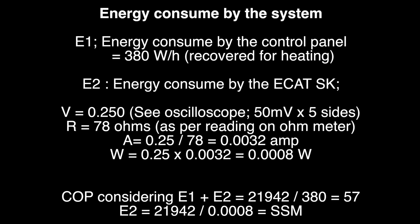We have seen that the resistance along the cable that supplies energy to the ECAT is 78 ohms. Ohm's law states that amps equals volts divided by resistance. So, substituting, we get amps equals 0.25 divided by 78, which equals 0.0032.